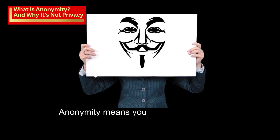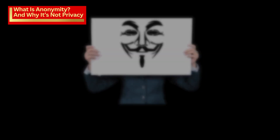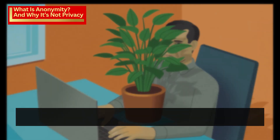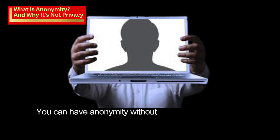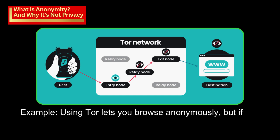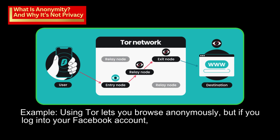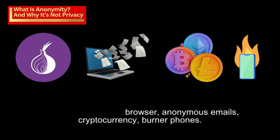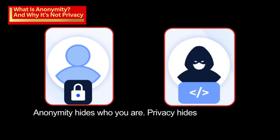What is anonymity and why it's not privacy? Anonymity means you can't be identified — you're using the internet but no one knows it's you. You can have anonymity without privacy and vice versa. For example, using Tor lets you browse anonymously, but if you log into your Facebook account, there goes your anonymity. Anonymity tools include the Tor browser, anonymous emails, cryptocurrency, and burner phones. Anonymity hides who you are; privacy hides what you do.